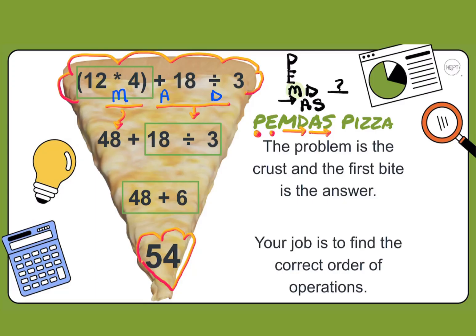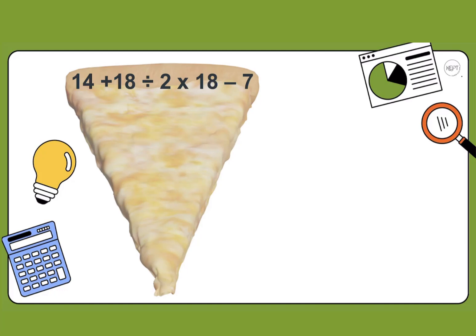Now we evaluate the remaining two operations: addition and division. Division is higher than addition, so we do division first — 18 divided by 3 is 6. We bring that down along with everything else: 48 plus. Our last problem is addition: 48 plus 6 is 54, which is our first bite. Following the order of operations gives the correct answer every time.